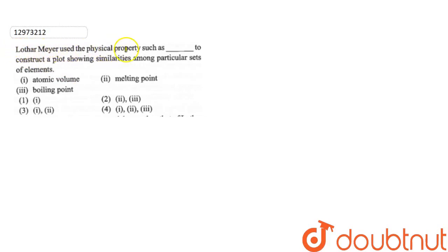Lothar Meyer used the physical properties such as to construct a plot showing similarities among particular set of elements. Lothar Meyer uses the physical properties: atomic volume, melting point and boiling point.